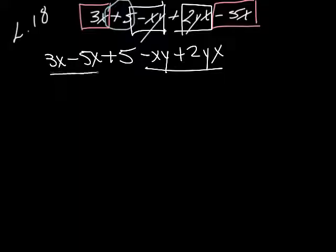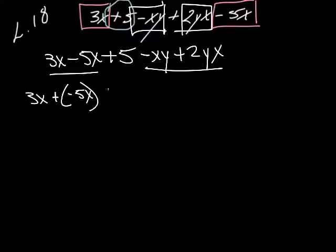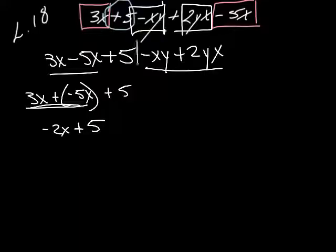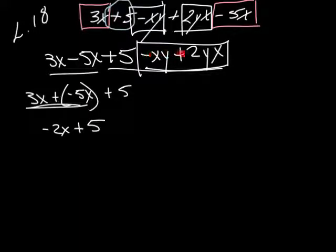So 3X minus 5X is the same as 3X plus negative 5X, plus 5. The signs are different, so you take the difference between the two and put the sign of the largest one on there. We can't add anything to the 5, so that stays. For negative XY plus 2YX, signs are different, so take the difference and put the sign of the largest on the answer. I'm going to write that as negative 2X and arrange the letters together.